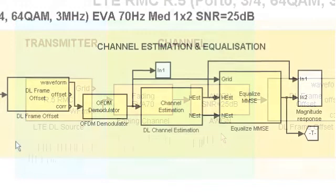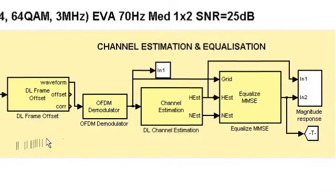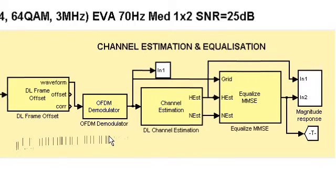The received waveform is synchronised to compensate for the delay caused by the fading channel and then OFDM demodulated to recover the resource grid. At this point, the grid is faded due to the propagation channel and needs to be equalised.